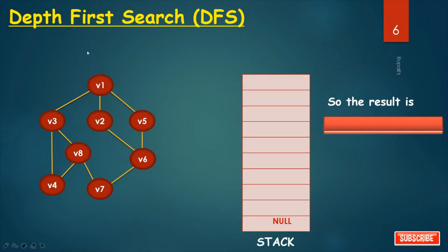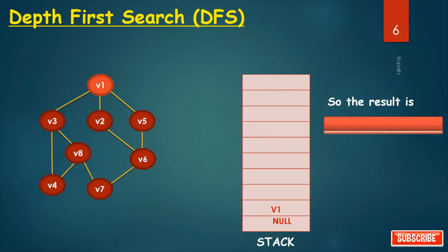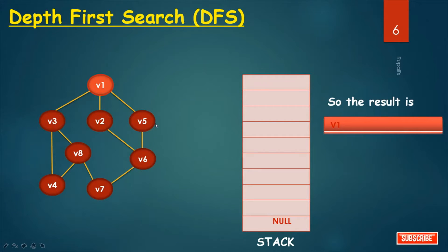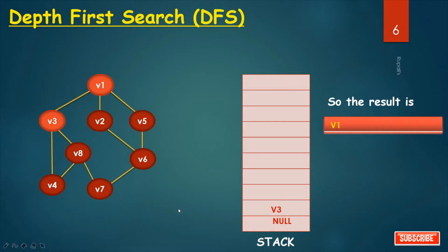I start. The status of V1 is 1, so I insert V1 into the stack — status becomes 2. When I pop V1 from the stack, status is 3. The connected nodes with V1 are V3, V2, and V5. All have status 1, so I can push. You can push in any sequence — for example, first V3, then V2, then V5.